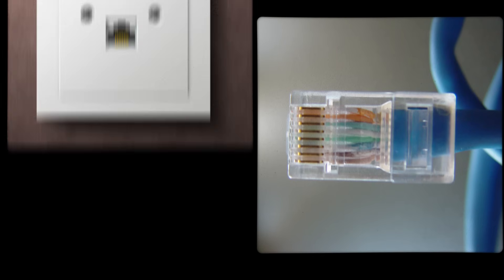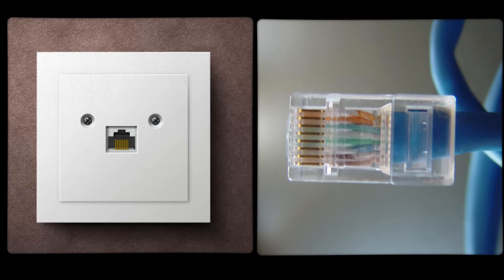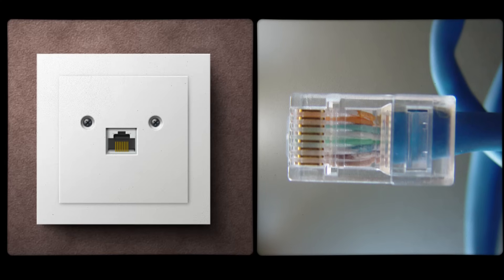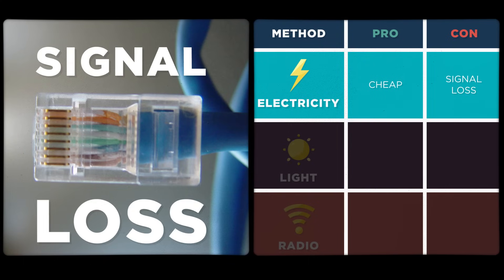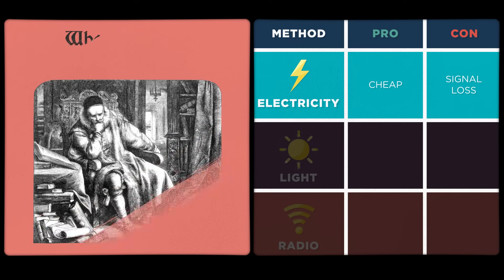With an ethernet wire, the kind that you find in your home or office or school, you see really measurable signal loss over just a few hundred feet. So if we really want this internet thing to work over the entire world, we need a different way of sending this information really long distances — like across an ocean. So what else can we use?